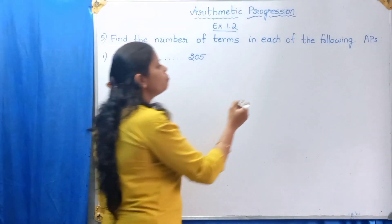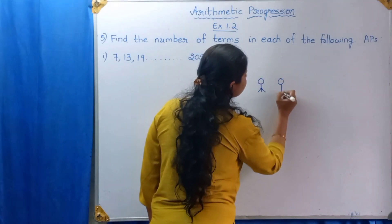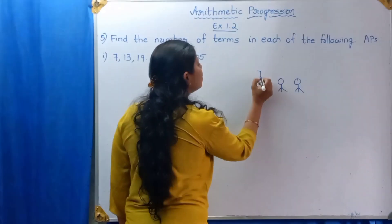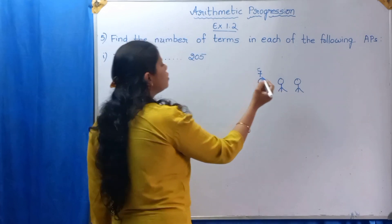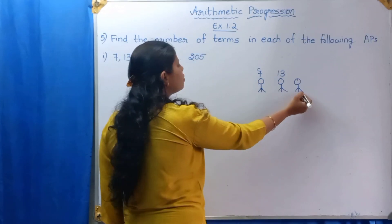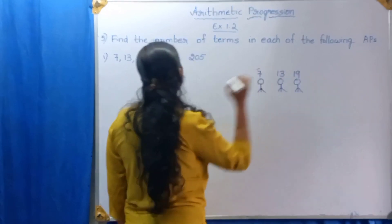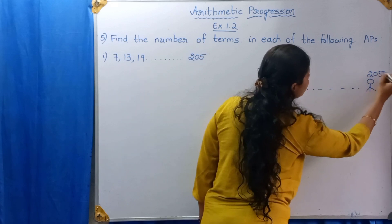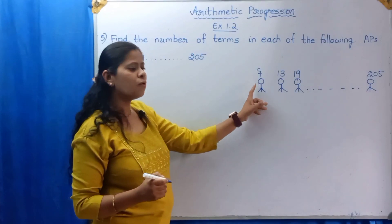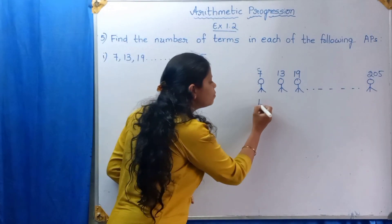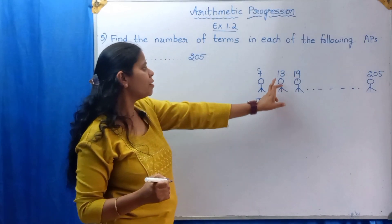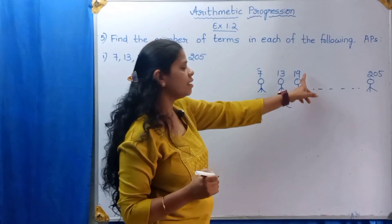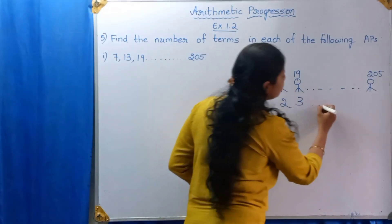Imagine there are so many members. Imagine the first person is holding the number 7, the second person is holding the number 13, the third person is holding the number 19, and the last person is holding the number 205. The person holding the number 7 is in the first place, the person holding 13 is in the second place, and the person holding 19 is in the third place.